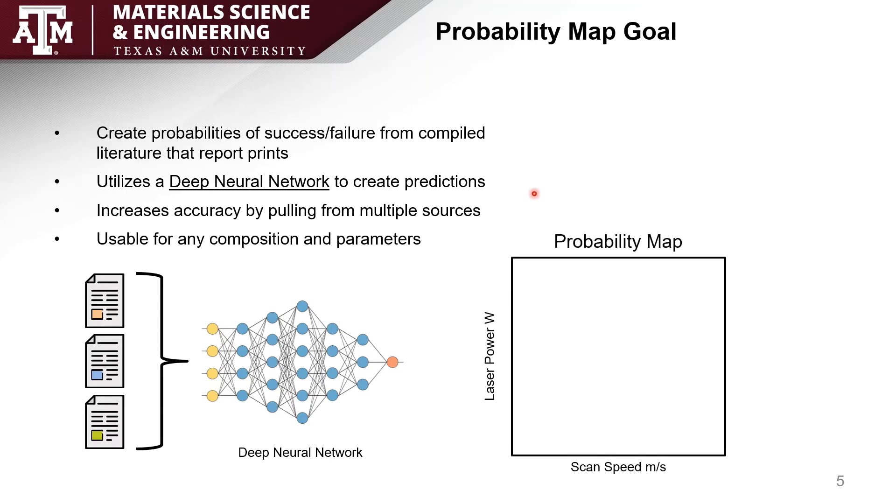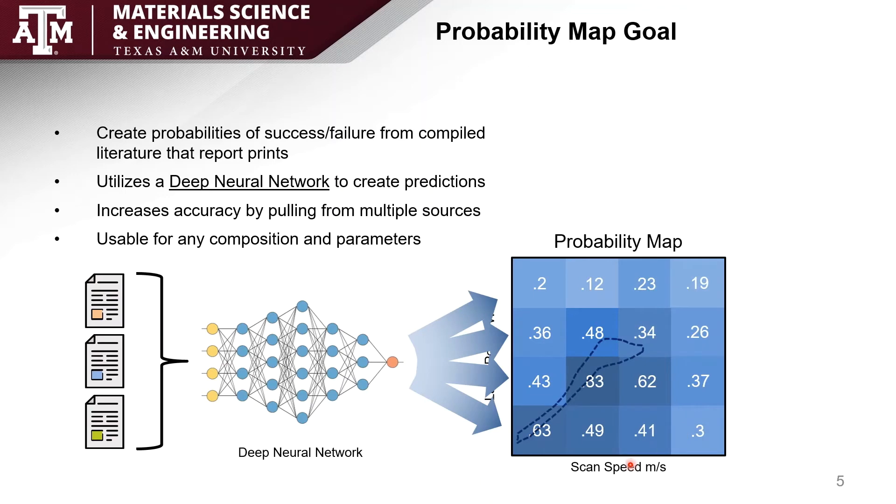From here we're able to create a map that has the same format as a printability map using scan speed on the x, laser power on the y, but instead of creating those four regions we show probabilities in each of the areas that can outline a successful print versus unsuccessful print.